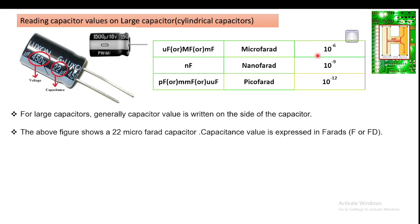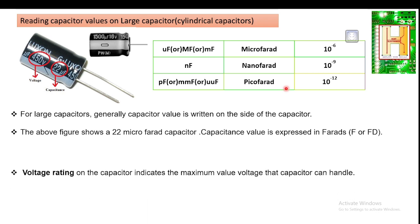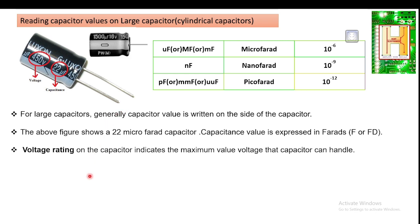Microfarad is 10 raised to minus 6. You can convert it into nanofarad, which is 10 raised to minus 9, or into picofarad, which is 10 raised to minus 12. The voltage rating on the capacitor indicates the maximum voltage the capacitor can handle. For example, if it is 450 volts, you cannot give it 500 volts, otherwise it will get damaged.